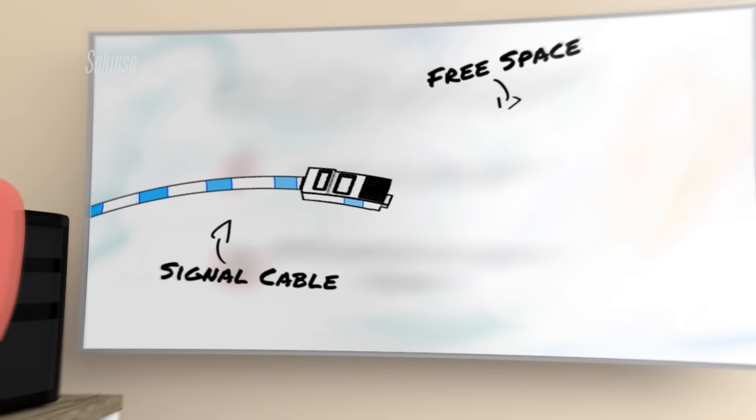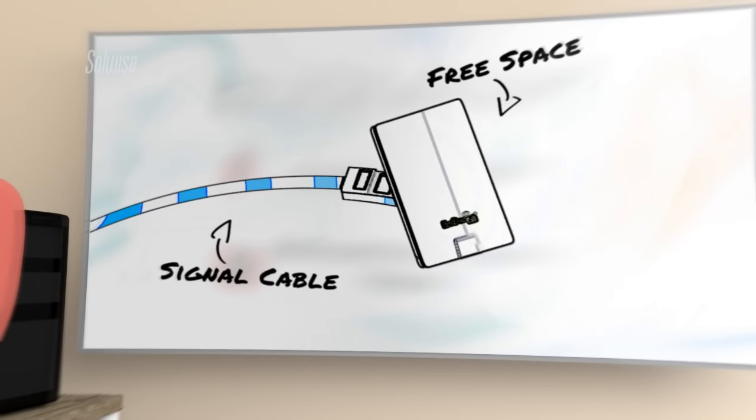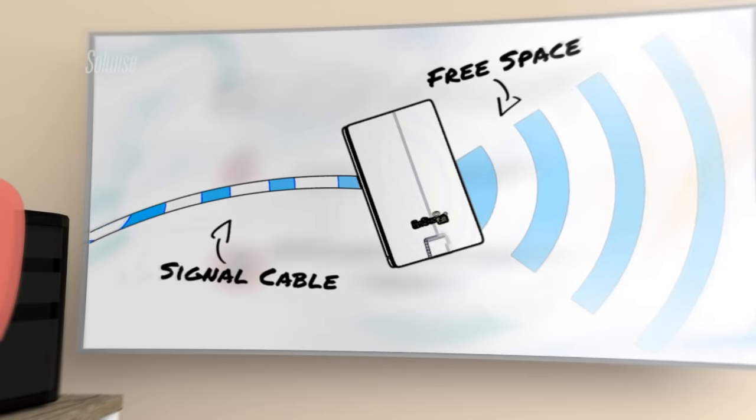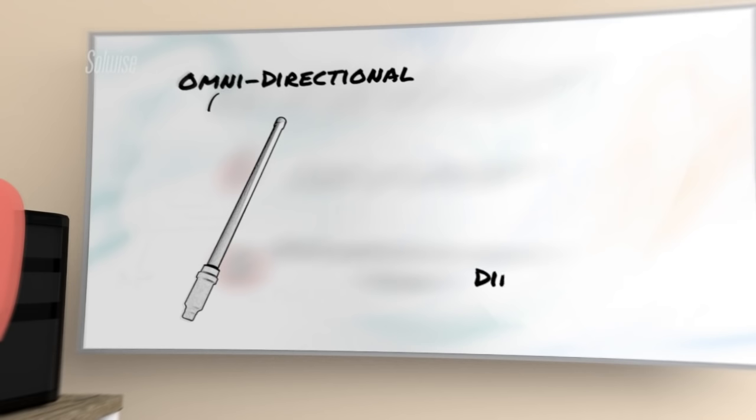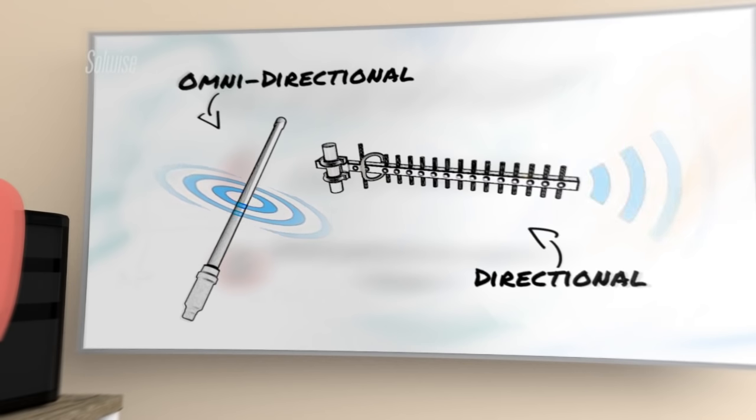Although there are many different techniques used in the design of antennas, they all have the same purpose – to provide an efficient connection between a signal cable and the air or free space around the antenna. Real antennas come in two basic types, distinguished by their radiating pattern – omnidirectional and directional. We'll start by looking at directional antennas.